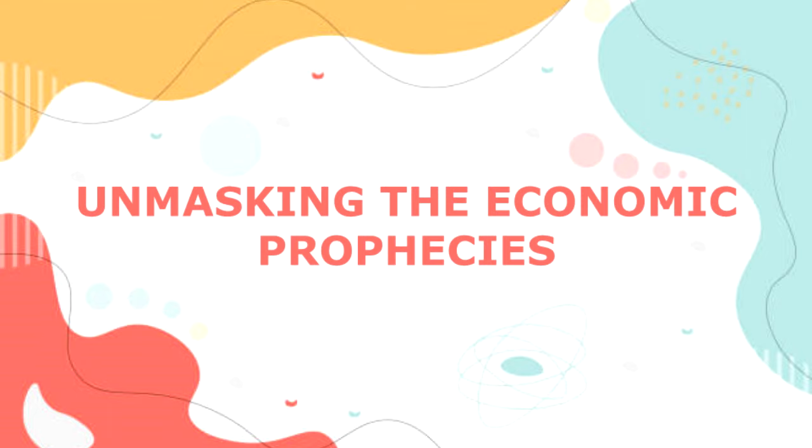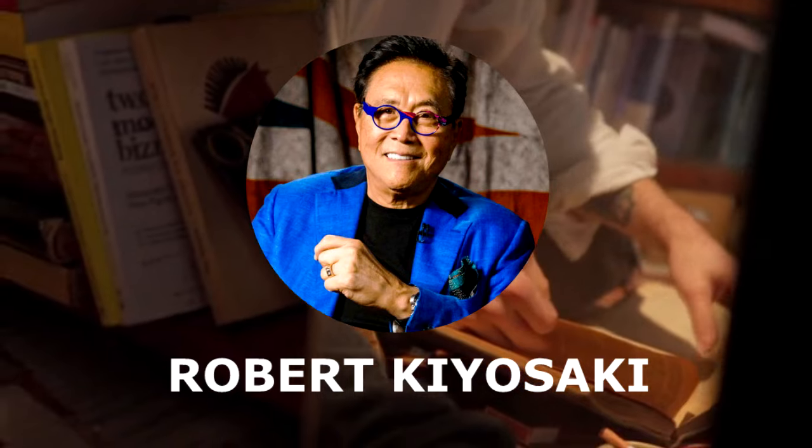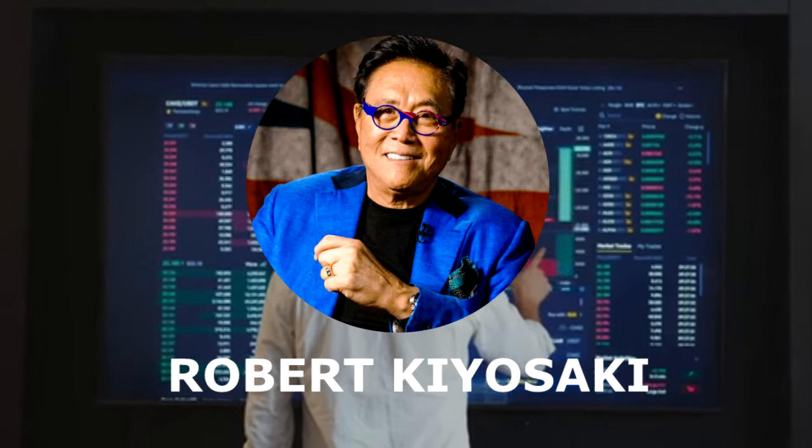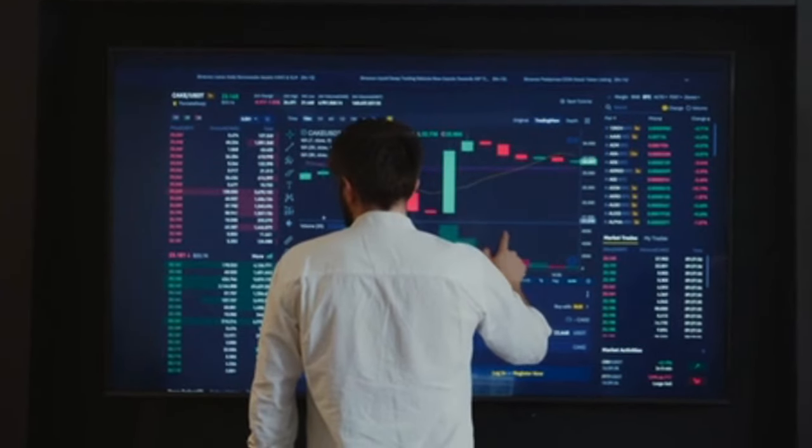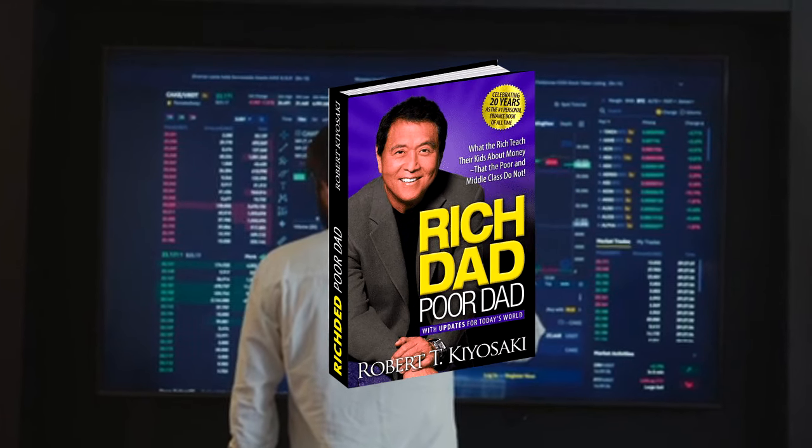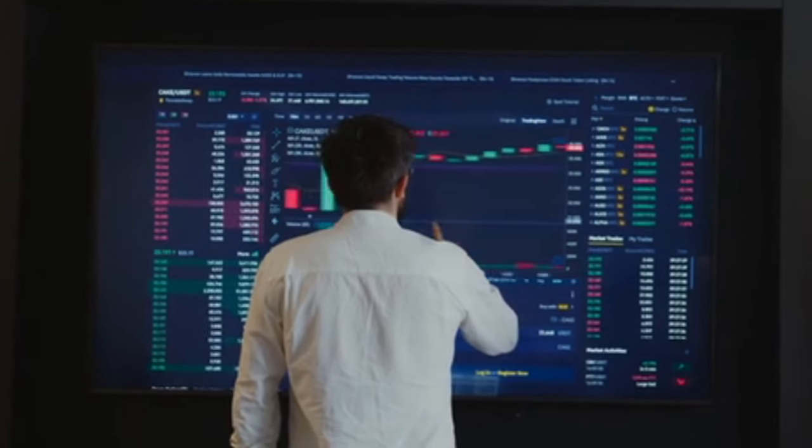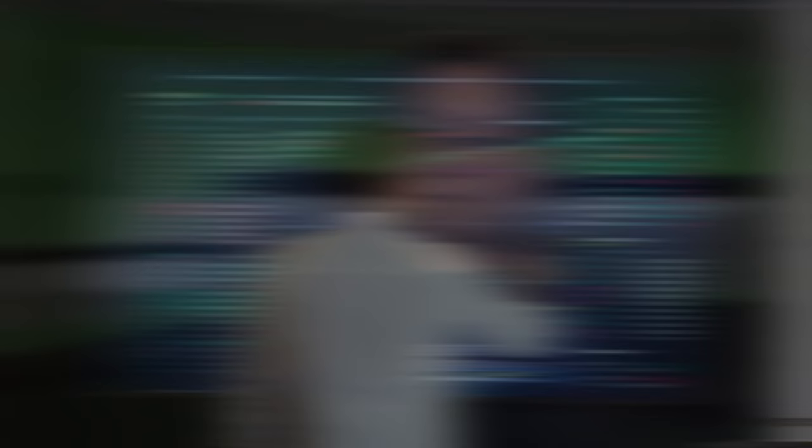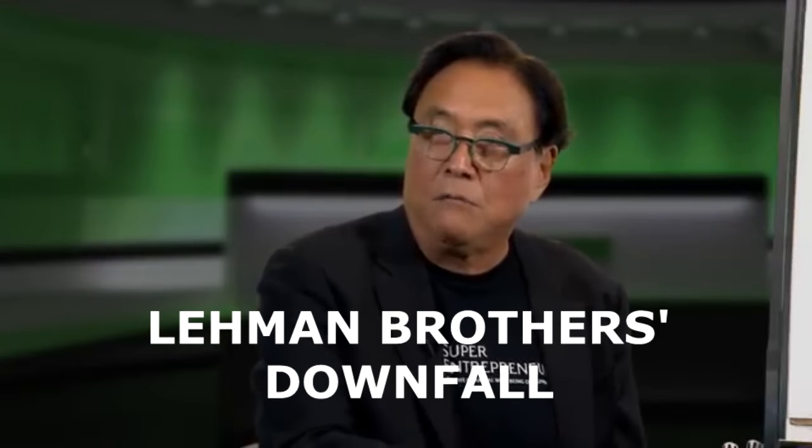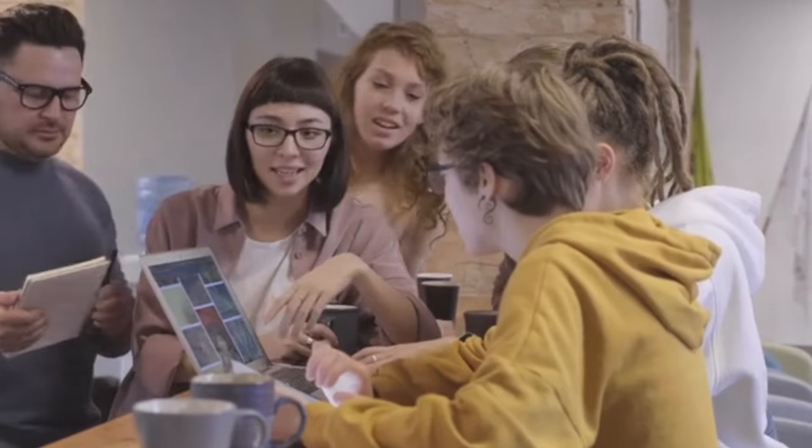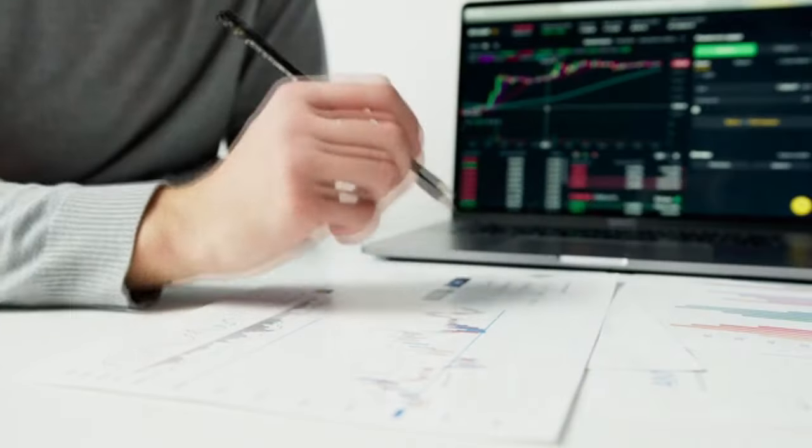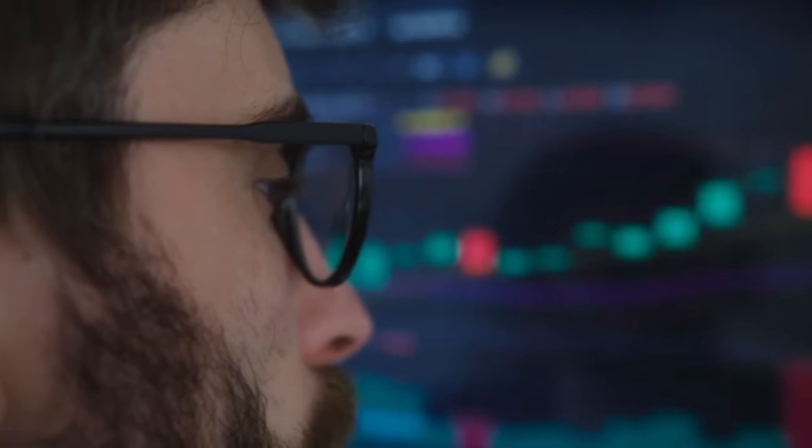Unmasking the Economic Prophecies. Robert Kiyosaki isn't just an author. He's a financial visionary, the mastermind behind the iconic Rich Dad Poor Dad. His insights have consistently been ahead of the curve. Remember his almost prophetic prediction about the Lehman Brothers' downfall? That wasn't mere speculation. It was built on sound observation and understanding.